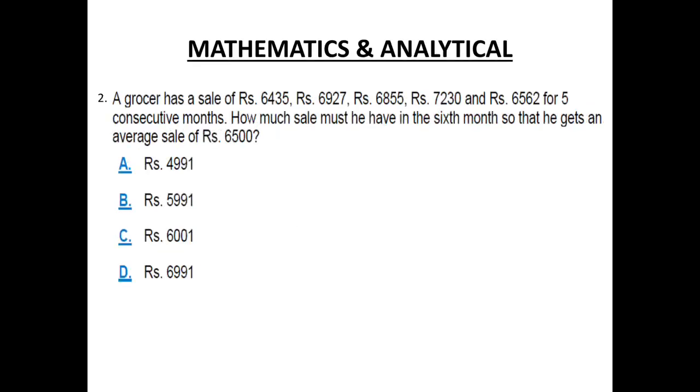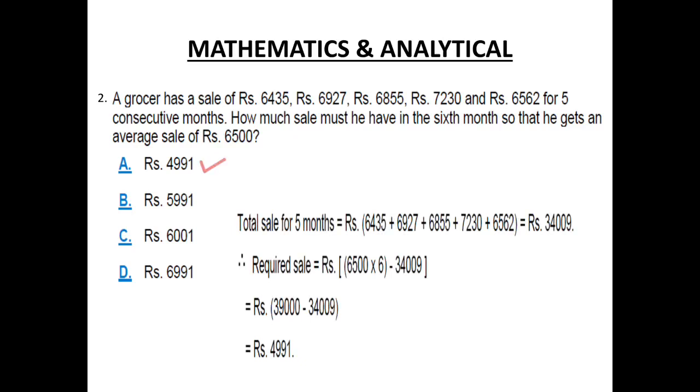Number 2. A grocer has a sale of Rs. 6435, Rs. 6927, Rs. 6855, Rs. 7230, and Rs. 6562 for 5 consecutive months. How much sale must he have in the 6th month so that he gets an average sale of Rs. 6500? Now this is a question about average.